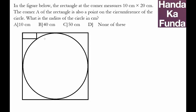In this particular question, we are given a rectangle in the corner that measures 10 centimeter by 20 centimeter. So this side is 10 and the bigger side is 20. Let me take the center as O, joining these points — let me call them OP and OQ.